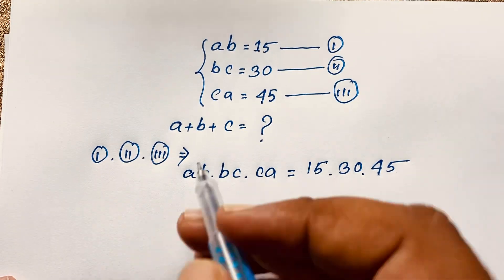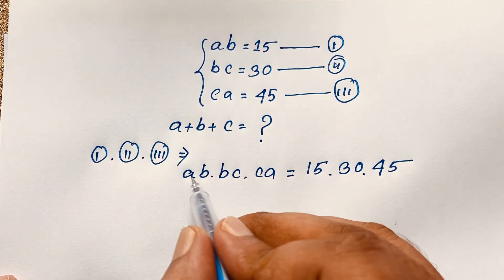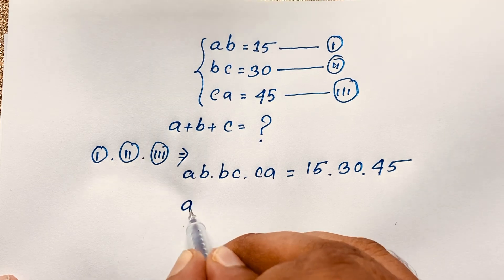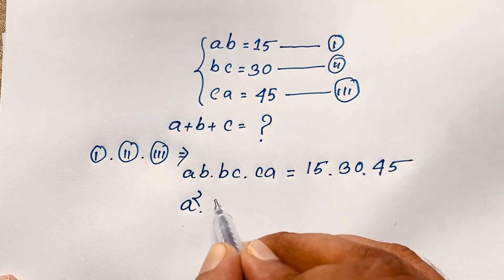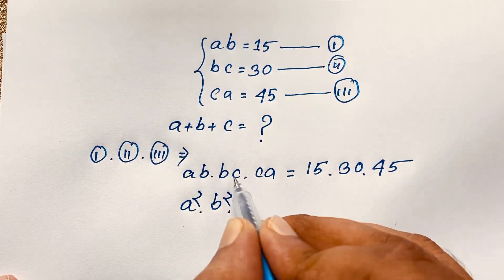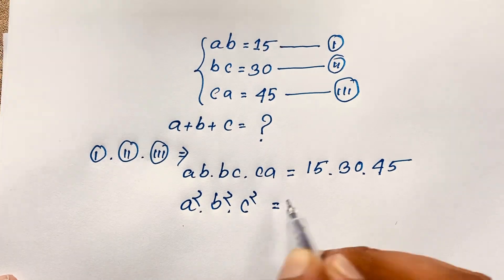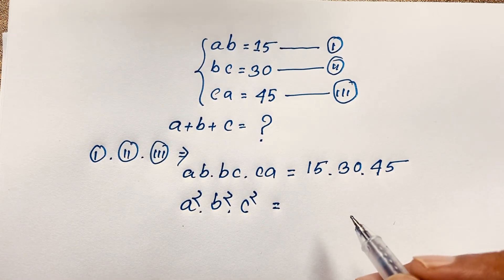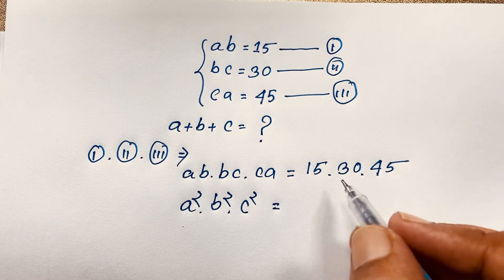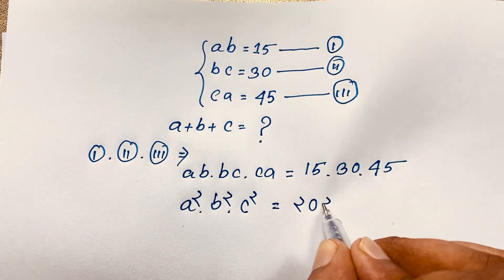When we multiply, we get a·a = a², b·b = b², c·c = c² on the left side. On the right side, 15 times 30 times 45 equals 20,250.